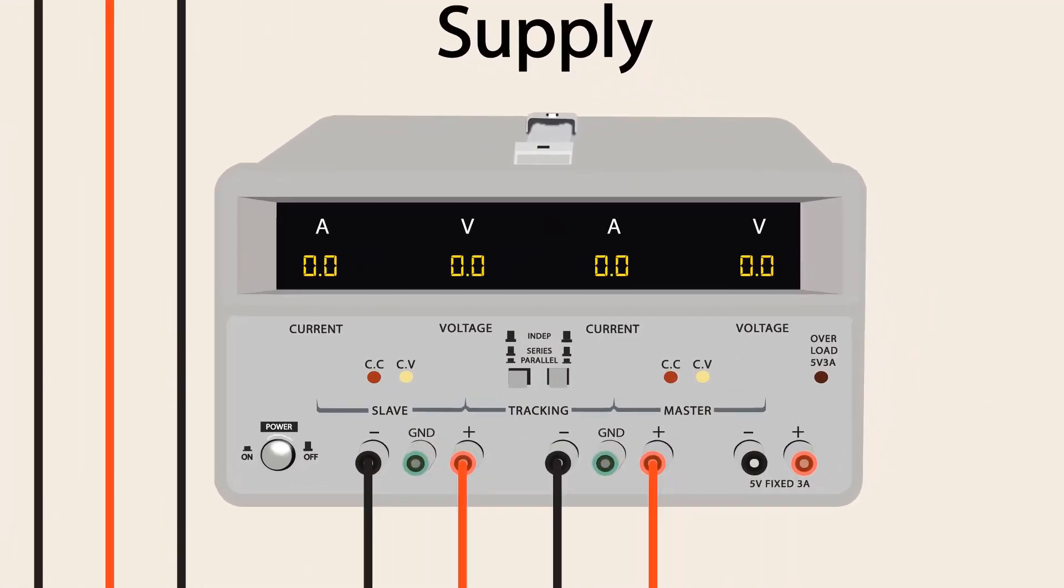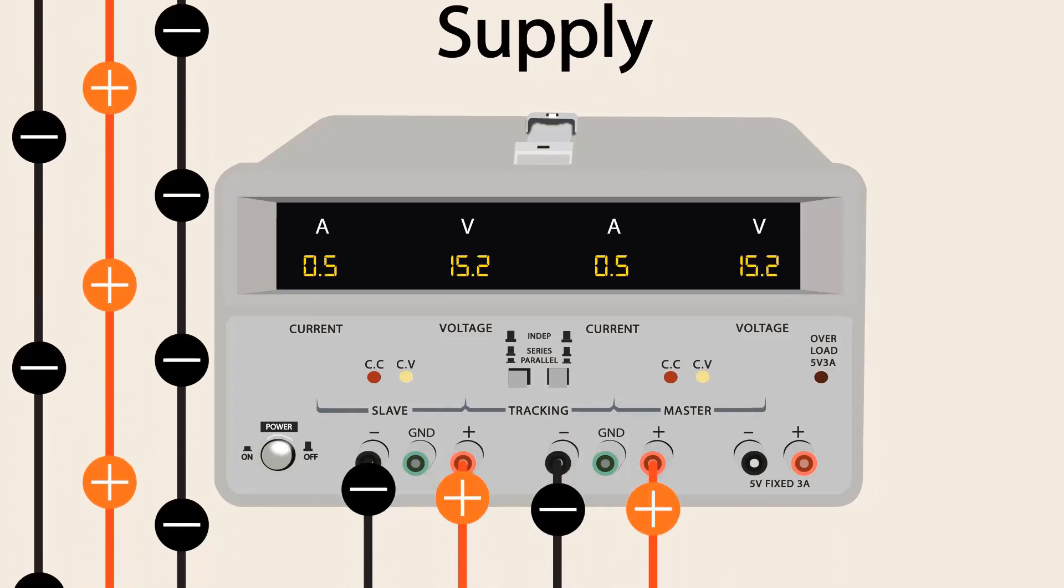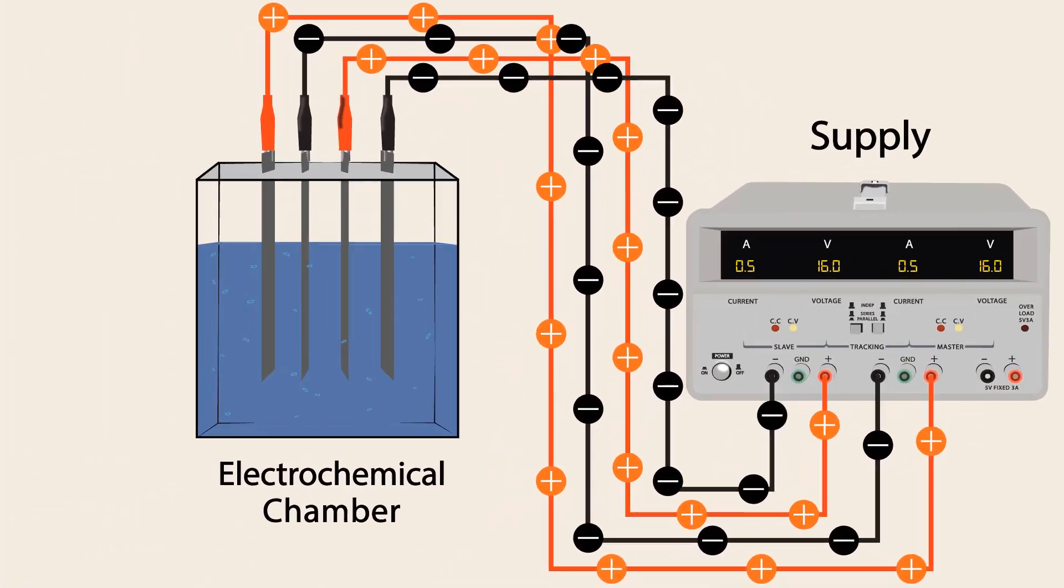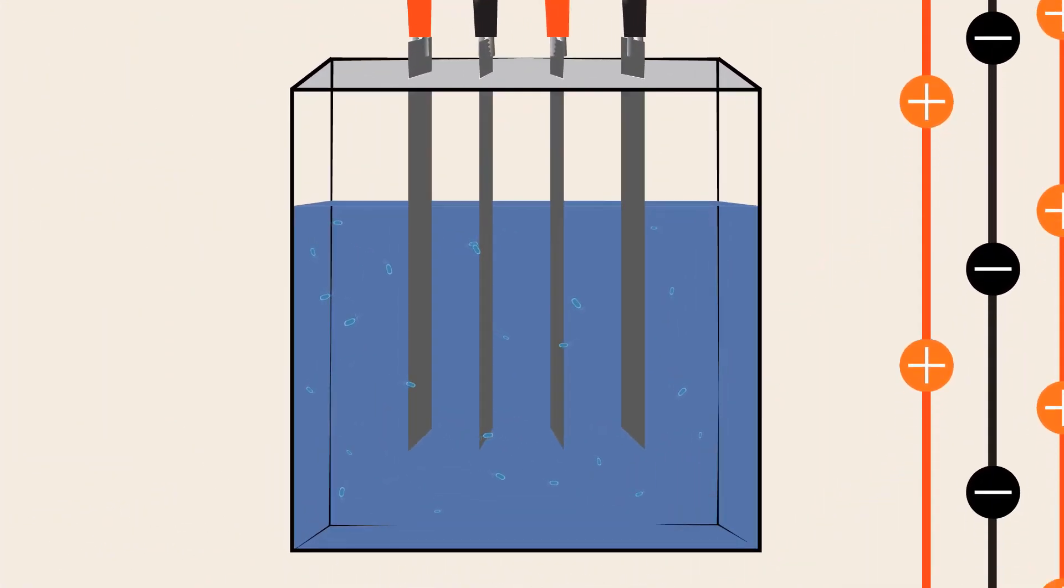In order to provide supply to the electrodes, turn on the DC power supply and adjust sufficient voltage and current that kill the germs. When the electrodes are powered, it ionizes the water of the electrochemical chamber and kills the germs and bacteria.